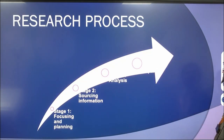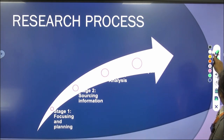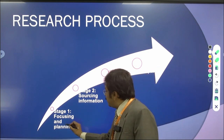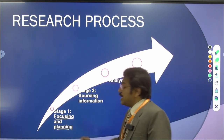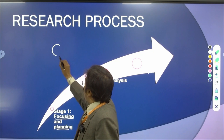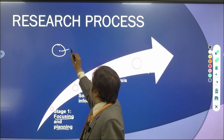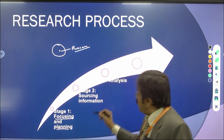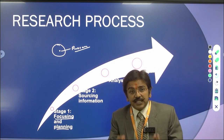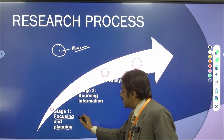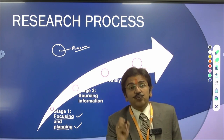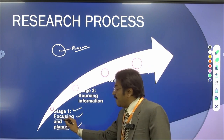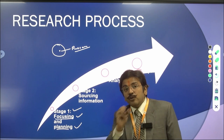Now, what is the research process? The research process is a process by which we get our study done. The first stage is focusing and planning — first of all we have to define what are the areas in which we are going to do our research. Focus is very important, and on that focus we have to plan what things are needed for our research, and how we are going to conduct our study.